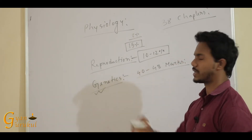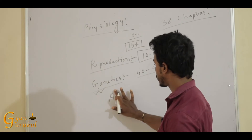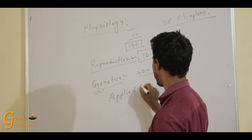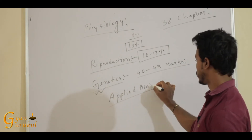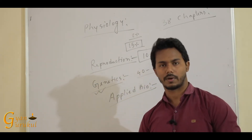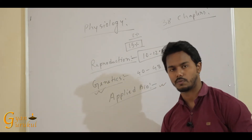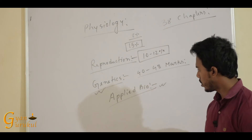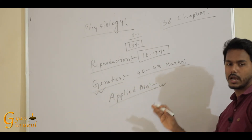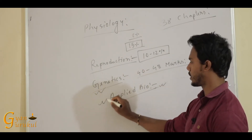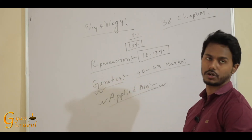The three chapters of genetics are: first, Mendelism — that is inheritance; second, Molecular Basis of Inheritance; and third, Evolution. These three are the major chapters of the genetics portion. After that comes applied biology, which covers modern equipment and modern technologies in biology, including biotechnology and molecular biology sections with their applications and theories.